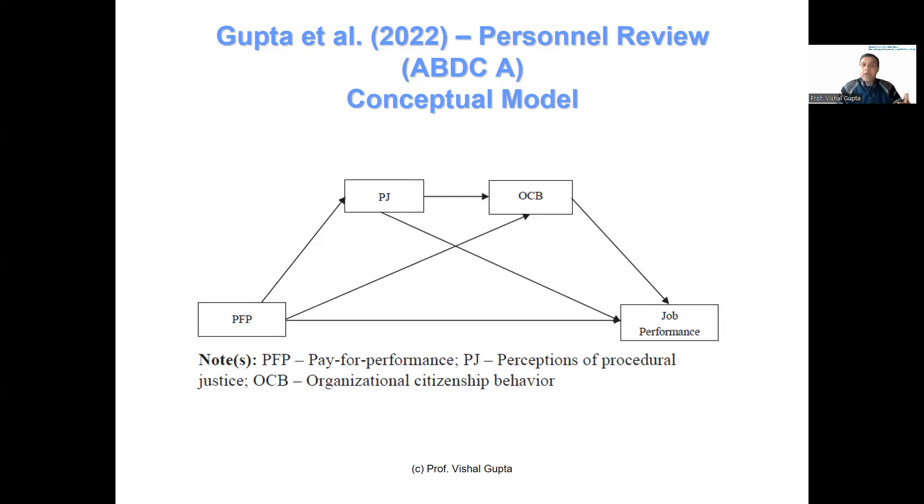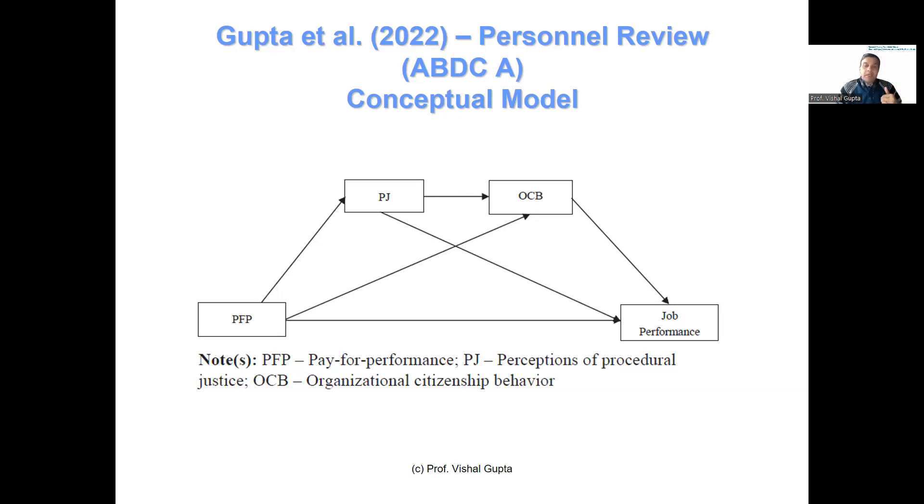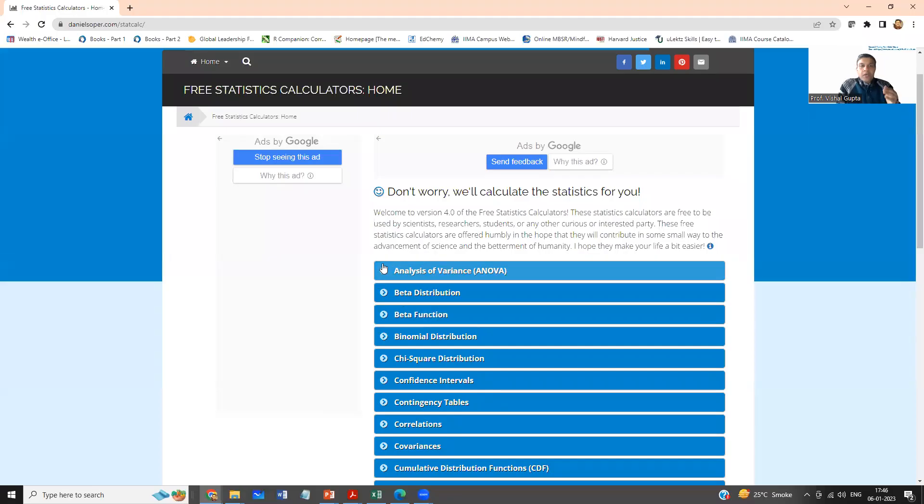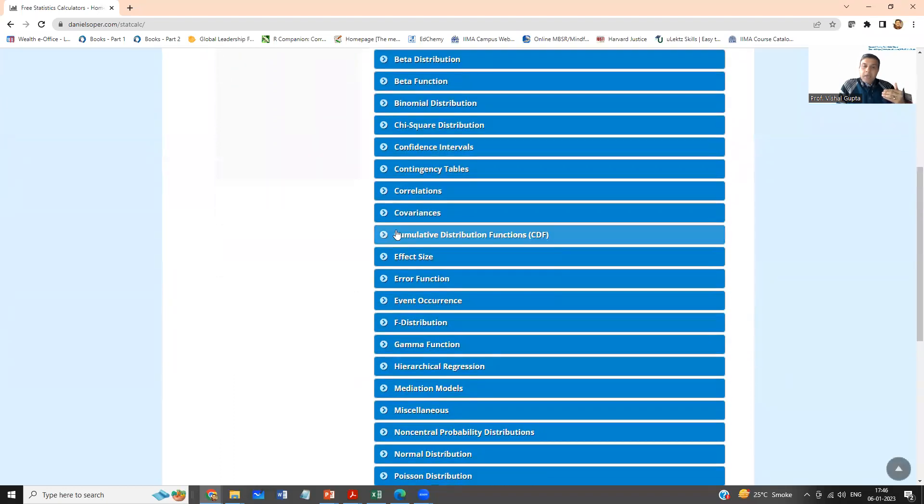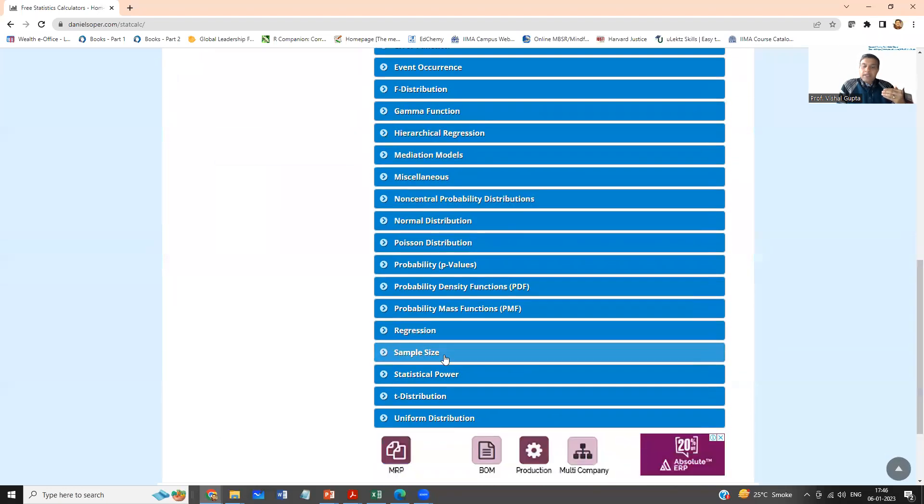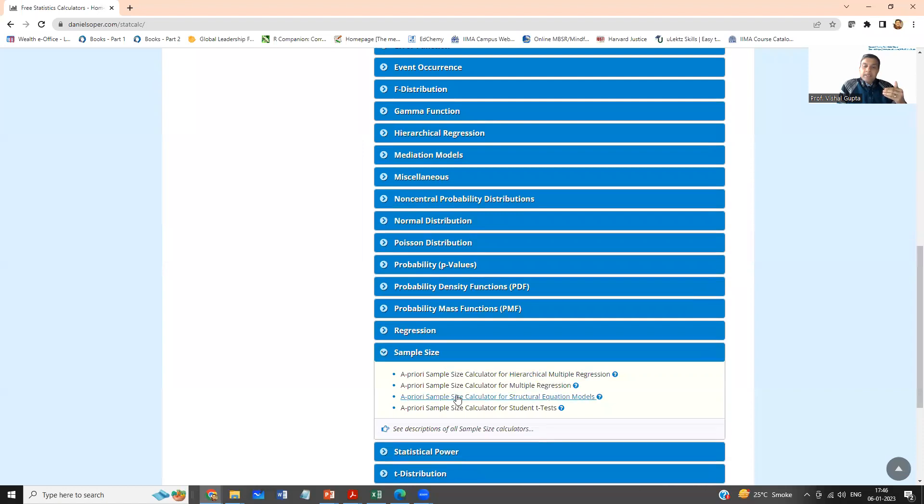Now in order to analyze this model through structural equation modeling, I had to compute my sample size. Now how do you do that? There is a very good sample size calculator that you can see on this link. Let me show you - this site has a lot of calculators for statistics. If you go down, you will see sample size and a priori sample size calculator for structural equation models.